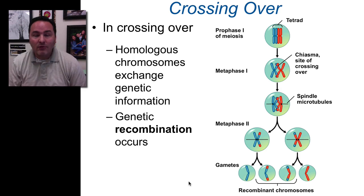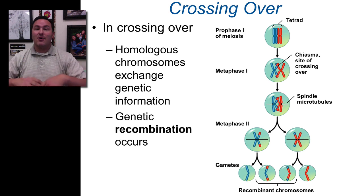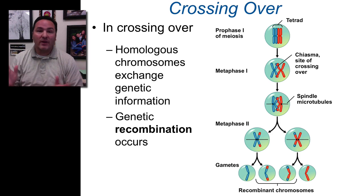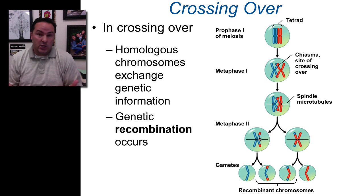Furthermore, crossing over is happening — we form tetrads in meiosis I, and the chiasma, or site of crossing over, produces blue chromosomes with red tips and red chromosomes with blue tips. Crossing over happens about 1.4 times per chromosome, and adding that on top of the more than 8 million different possibilities expands the number of possible gametes enormously. Sexual reproduction, using the process of meiosis and creating this variation, accomplishes the goal of producing offspring that are a mixed bag of parental traits, allowing natural selection and evolution to work with these variations over time.